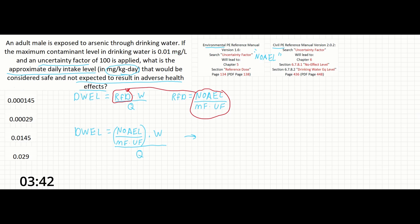And now that we have all of our terms defined, we can begin replacing variables with values from the problem statement and the reference manual. So our DWEL is going to be equal to the maximum contaminant level in the drinking water. This is going to be 0.01 milligrams per liter.